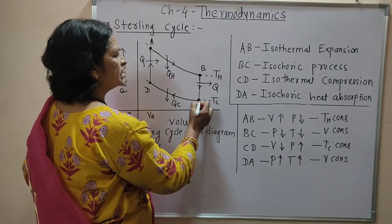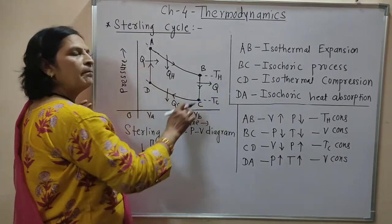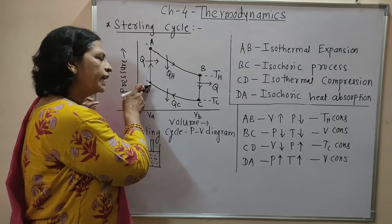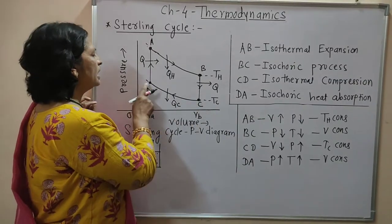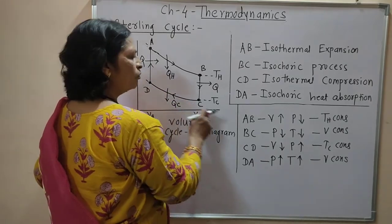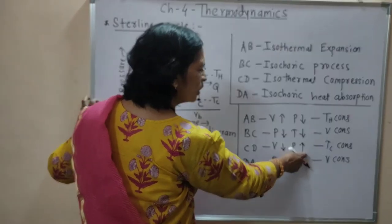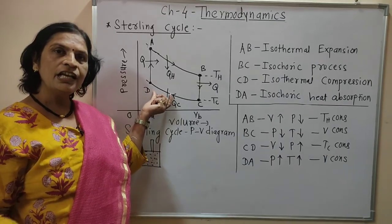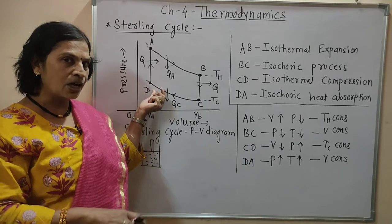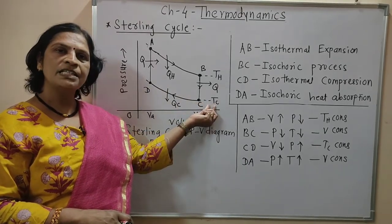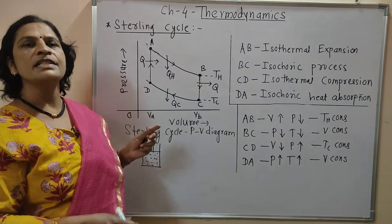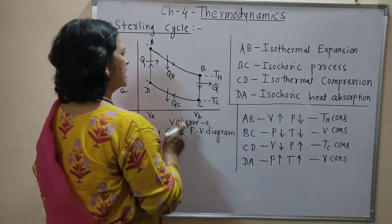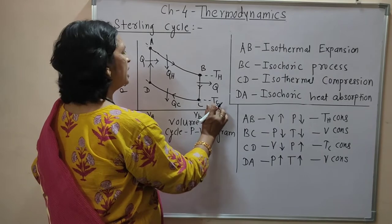The working substance is now at constant temperature TC. As the temperature decreases, volume goes on decreasing and pressure goes on increasing. During path CD, volume decreases and pressure increases at constant temperature TC. When volume decreases, that is compression at constant temperature TC, therefore it is called isothermal compression. During path CD, isothermal compression occurs and temperature TC remains constant.